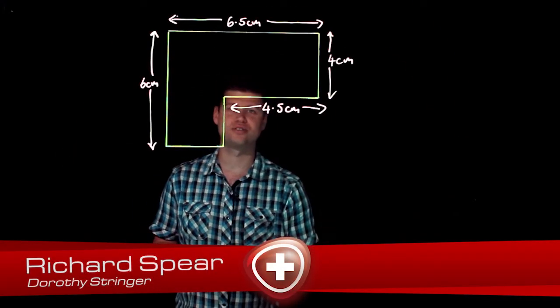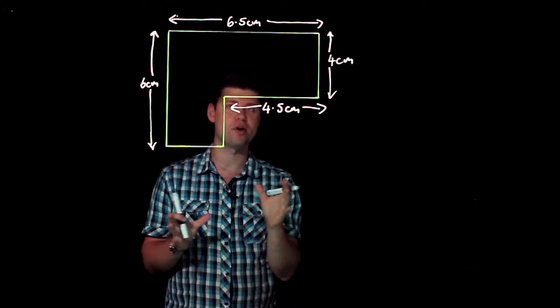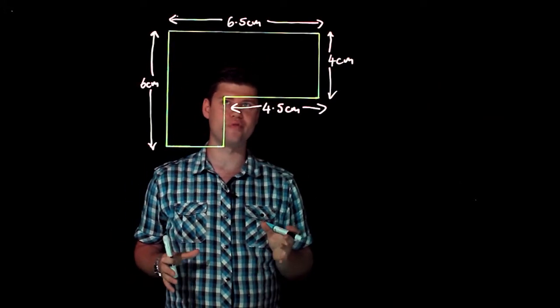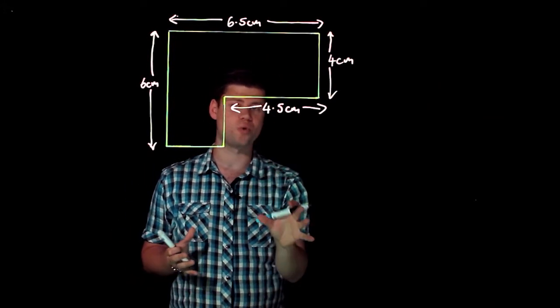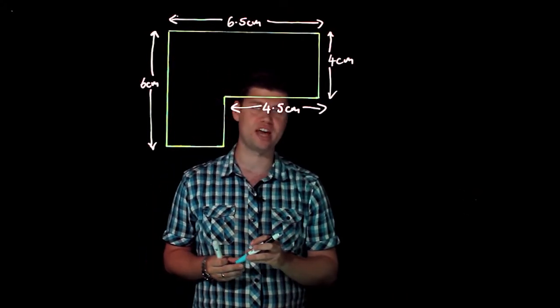In this video we're going to be looking at how to find the area of what we call a composite shape. What I mean by composite shape is this shape that I've got in front of me is not obviously just a rectangle or a square or a triangle or anything like that, it's a number of shapes that have been put together.